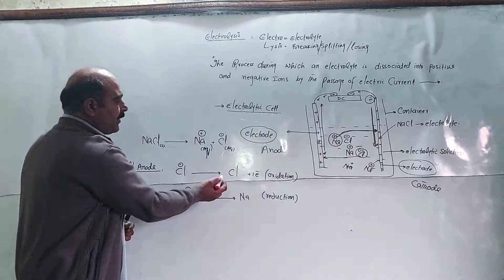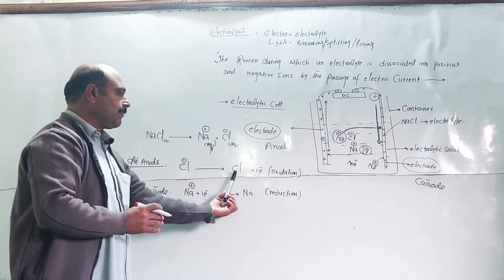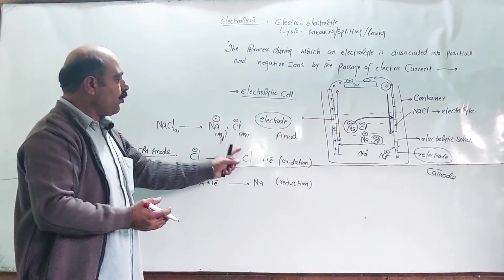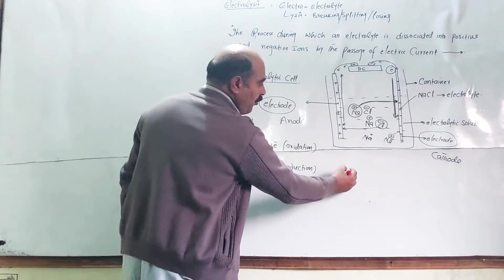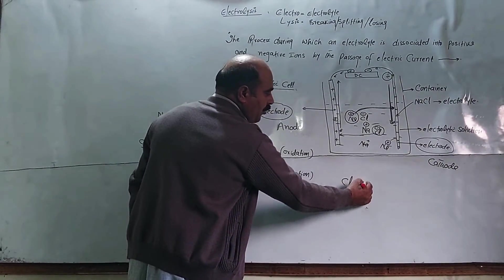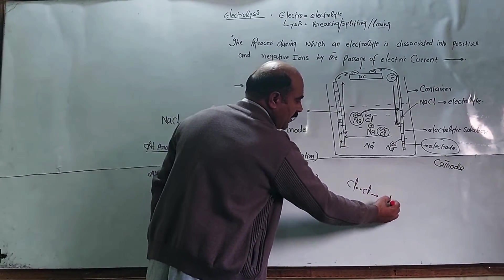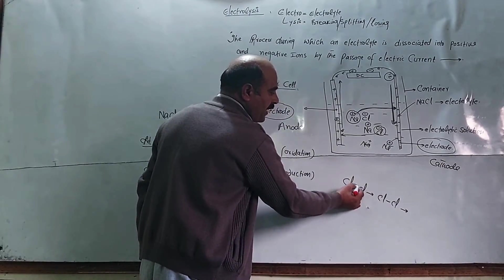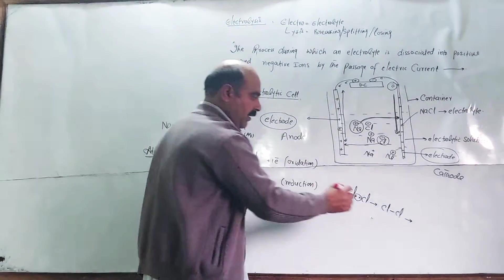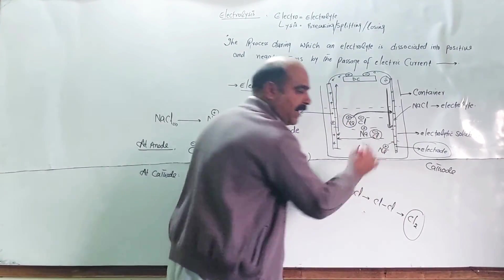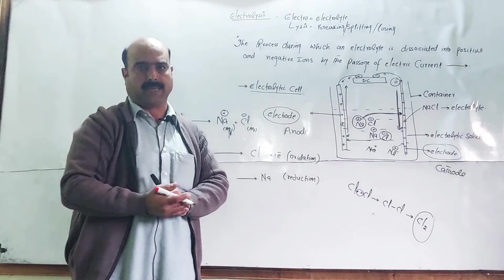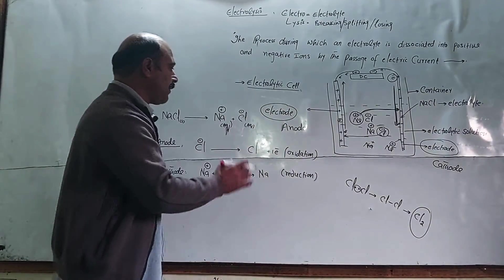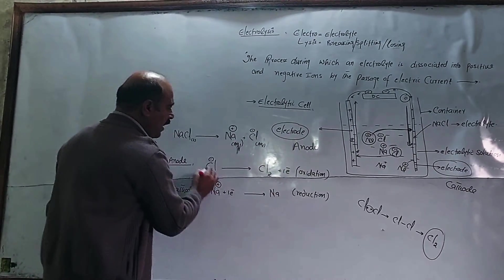Now let's look at the chlorine atoms produced at the anode. Chlorine does not exist in atomic form — it is unstable. Chlorine atoms combine by sharing electrons, forming a single covalent bond, resulting in the formation of a chlorine molecule, Cl₂. So two chloride ions lose two electrons and combine to form one chlorine molecule, Cl₂.